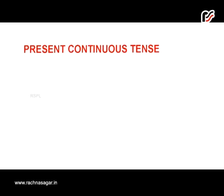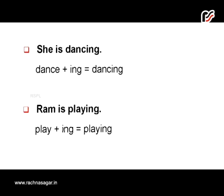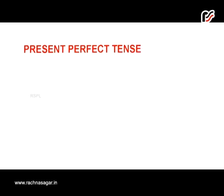Present continuous tense describes an action that is happening at the time of speaking. For example, 'She is dancing' or 'Ram is playing.' These examples are still in progress, so they are examples of present continuous tense. In present continuous tense, the first form of verb along with -ing is used — for example, dance + ing = dancing, play + ing = playing.